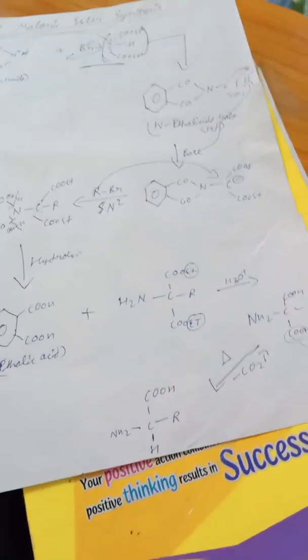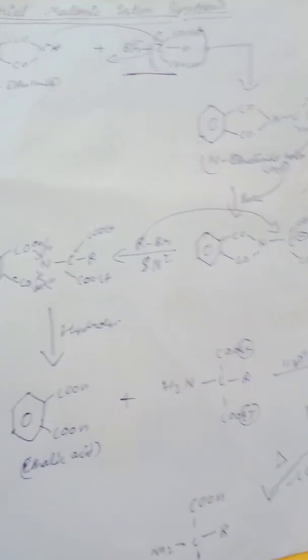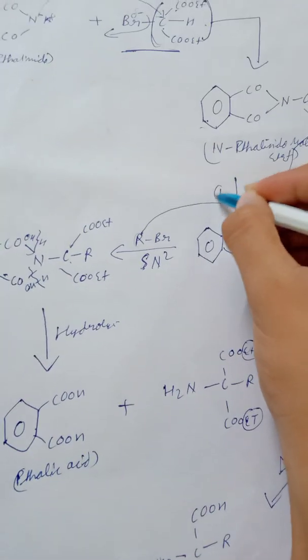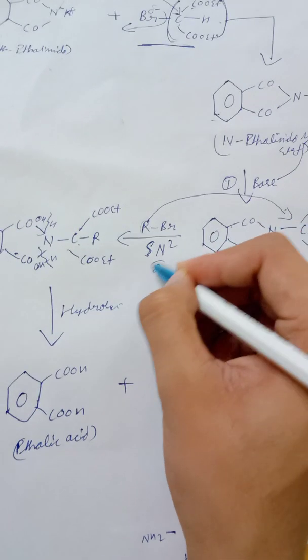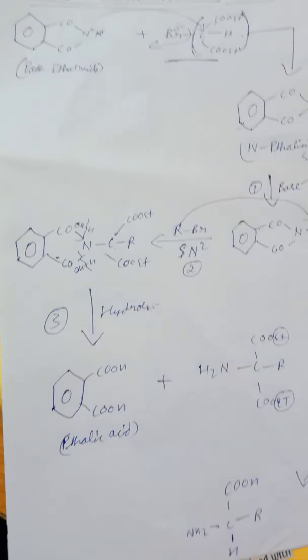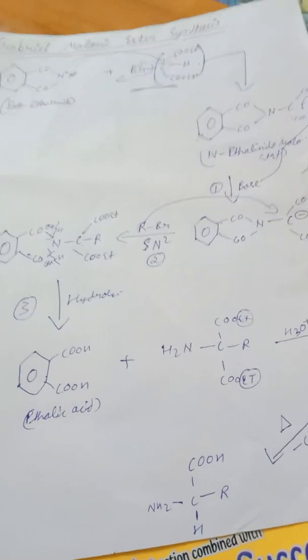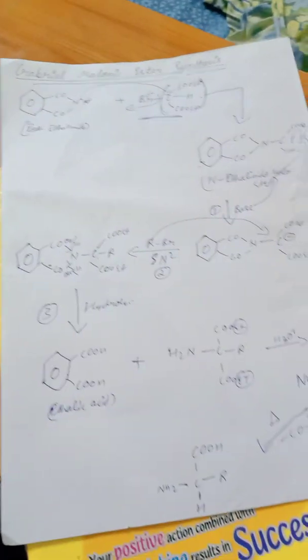So this COOH will become H and the CO2 will be removed. So this is the Gabriel malonic ester synthesis in which first step is to add base, second is the alkyl halide. This is the Gabriel phthalimide reaction. So hope you are doing well.